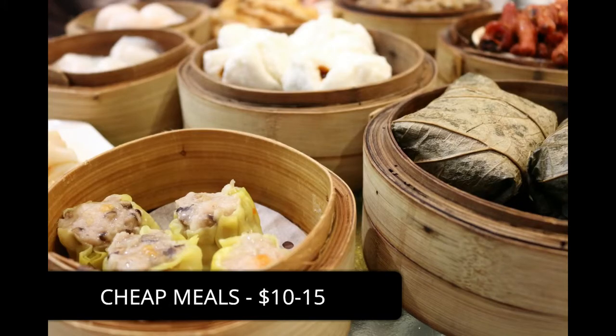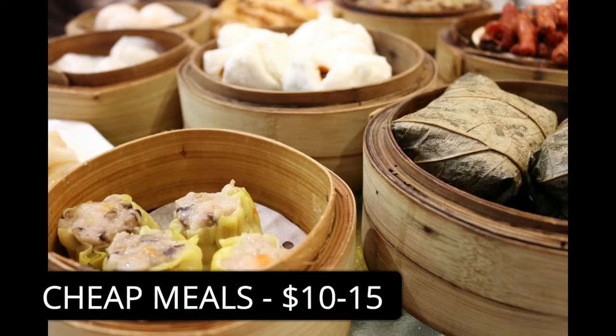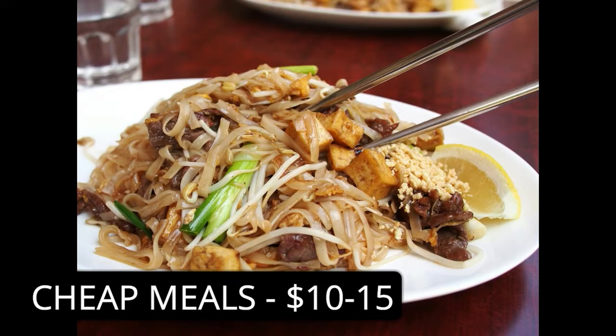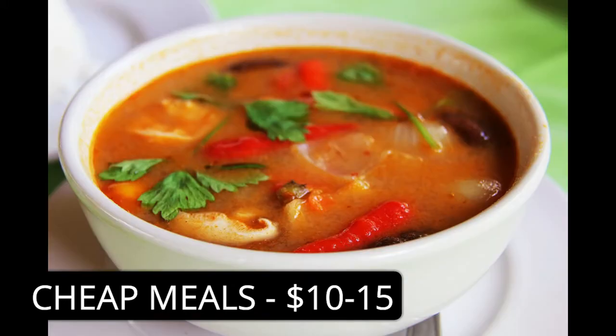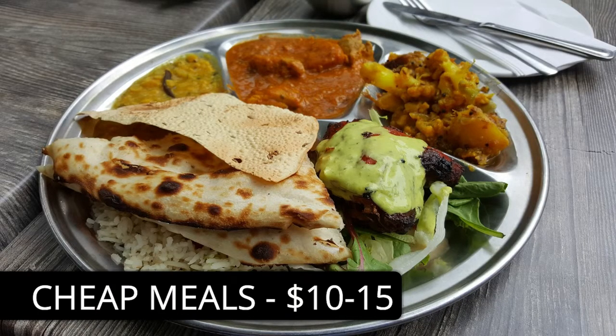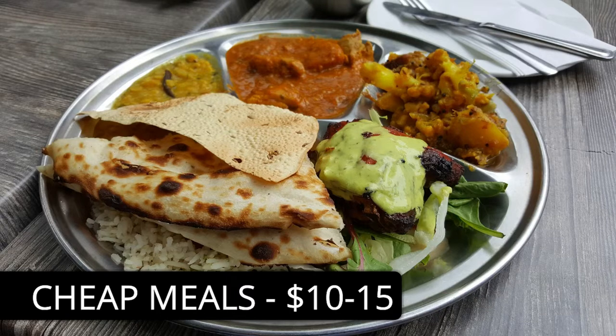For a cheaper restaurant lunch or dinner, you can get lots of quick and yummy meals for about $10.00 to $15.00, such as noodles, curries, soups, kebabs and dumplings. All types of deliciousness. Meals of this price are at some restaurants and also takeaway stores and food courts.